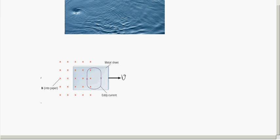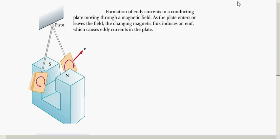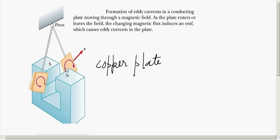Now we'll see more about what eddy currents do. Consider a copper plate. We take this copper plate and allow it to swing like a pendulum. It is fixed at the top and swings between the pole pieces of a strong magnet — S and N — so it swings in between this magnetic field.